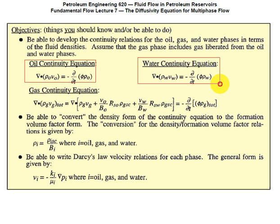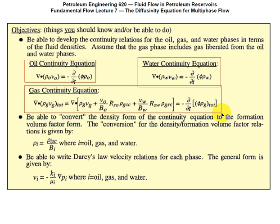We'll also have a gas continuity equation. Why is the gas continuity equation so much bigger? Because there's free gas, gas from water, and gas from oil. We haven't really talked much about the gas-from-water term. What's the scale of RSW? It ranges from about 5 to 30 standard cubic feet per stock tank barrel.